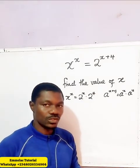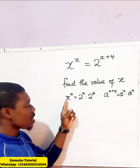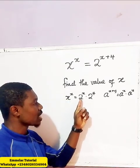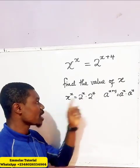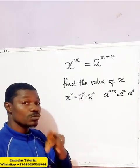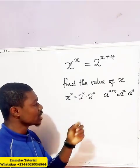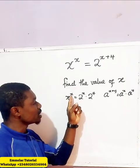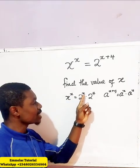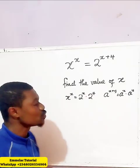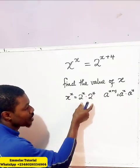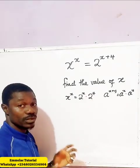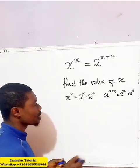The next thing we need to do is align the variables with the x exponents together. We do that by dividing both sides of the equation by 2 raised to the power of x.